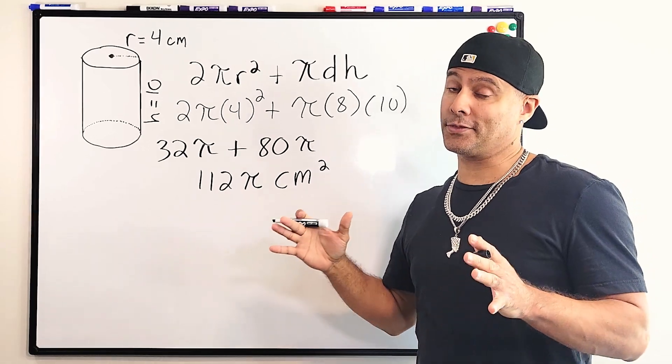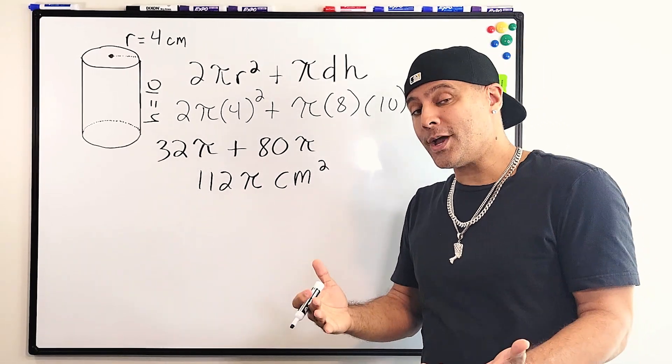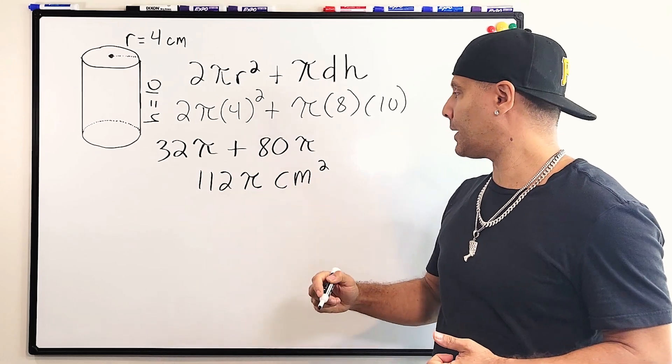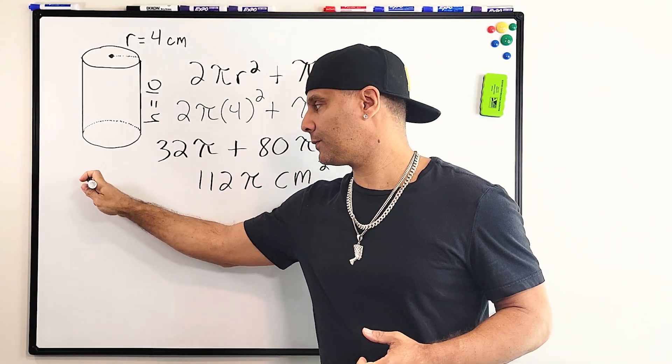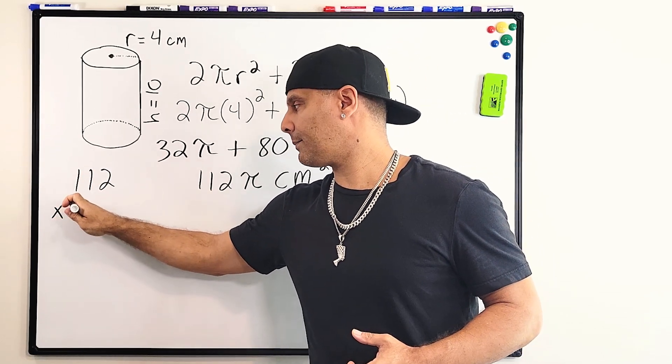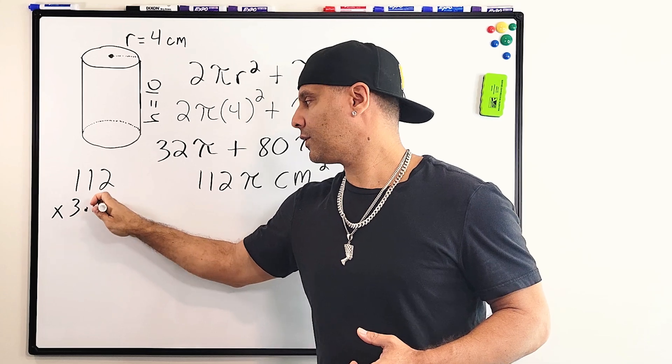Now, if you had to solve using 3.14 for π, all you have to do is plug 3.14 in for π and multiply it by 112. So let us go ahead and do that really quick. So we have 112, we're going to multiply that by 3.14.